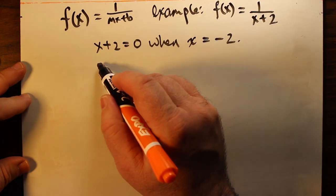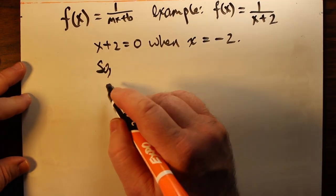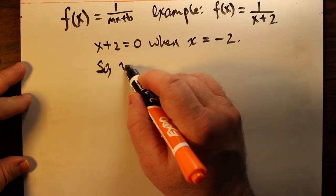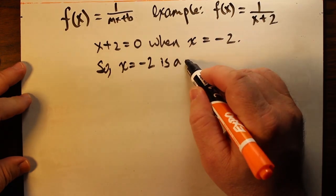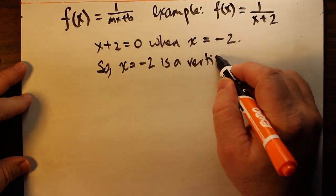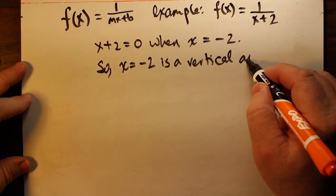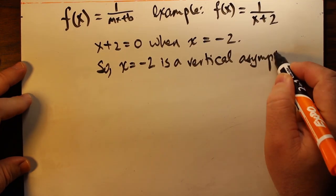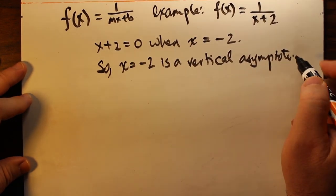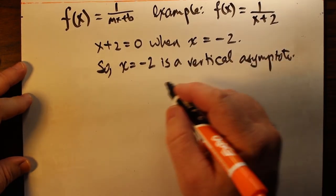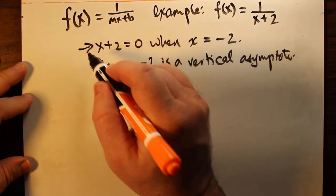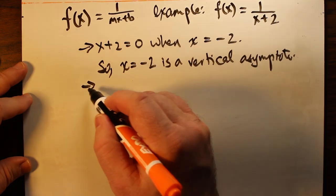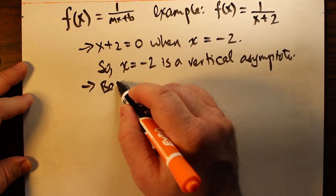Notice that x plus two equals zero when x is negative two. Also, we have the same issue as in the last example—we have a one in the numerator, which tells us this function will also never cross the x-axis. But we have a number, negative two, which makes the function undefined because we end up with one over zero again. So x equals negative two is a vertical asymptote.